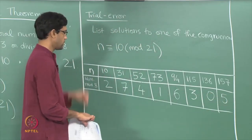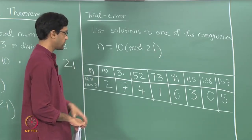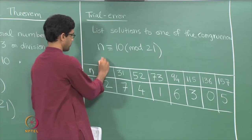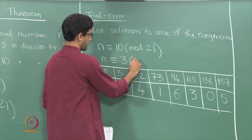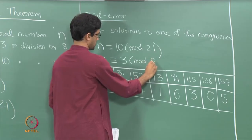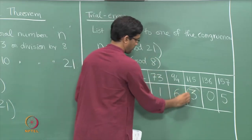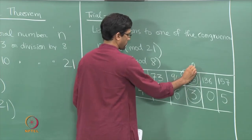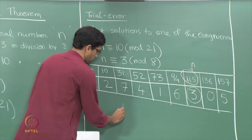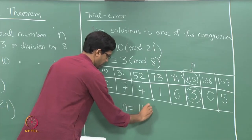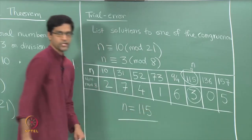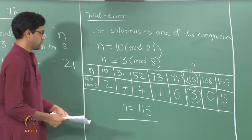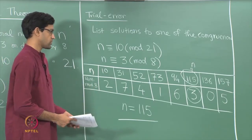Scanning through this list, the number 115 also satisfies the second condition — n congruent to 3 mod 8. So the solution we are interested in is n equals 115. We have solved the problem: n equals 115 is the smallest natural number which is congruent to 10 mod 21 and 3 mod 8. That is the brute force approach.